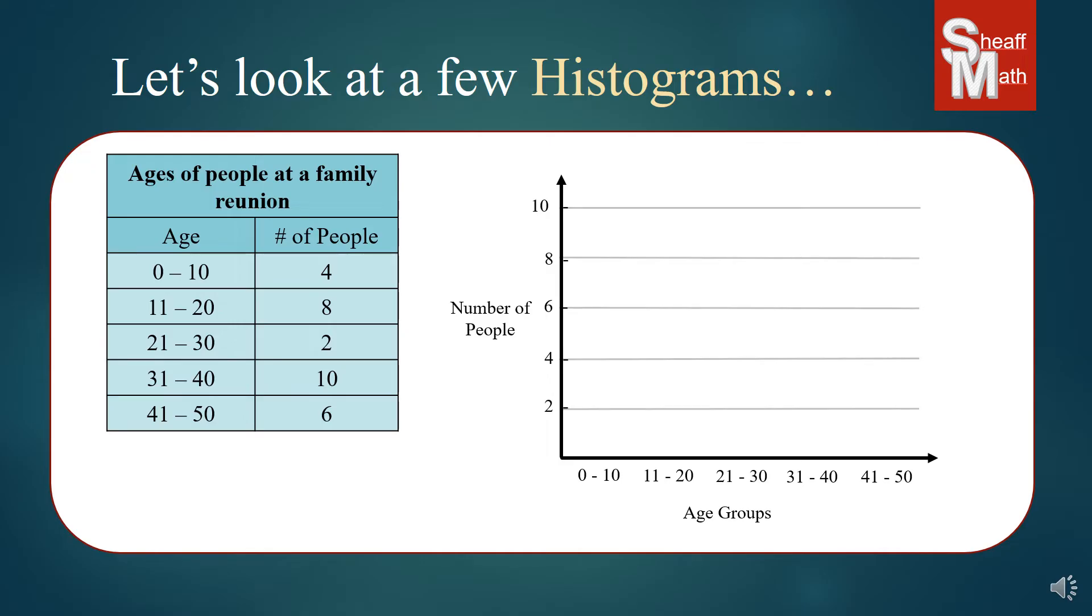Now, this histogram has to do with the ages of people at a family reunion. And you'll see on the left, we've got zero to ten, four. But before we look at that, I want you to look at the y-axis there. And these aren't going by one, two, three, four, five. It's going by twos. So always pay attention to the numbers on the left so that you know you're putting the correct bar in there.